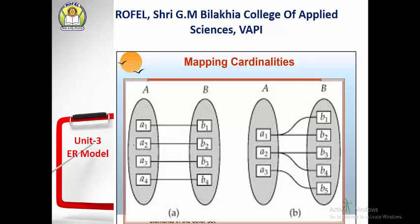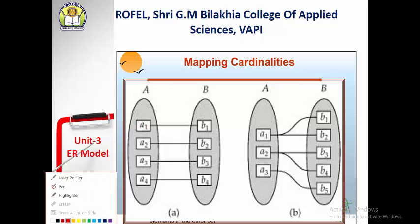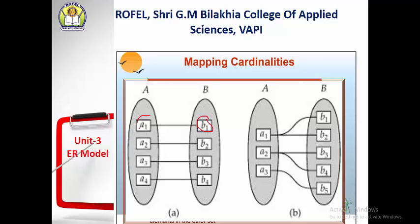Visually, for entities A and B: in a one-to-one relationship, a single instance of entity A is associated with a single instance of entity B. In a one-to-many relationship, one instance of entity A — like A1 — is connected with many instances of entity B, such as B1 and B2.